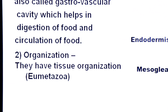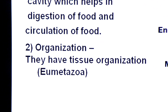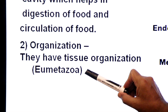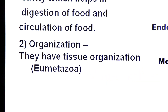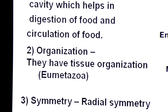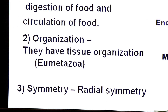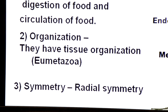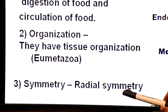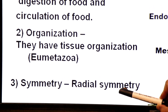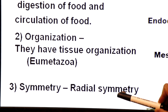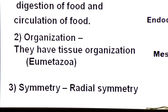Character number two is their organization. They have tissue organization and belong to the group Eumetazoa, having tissue organization. Regarding symmetry, the members of phylum Coelenterata have radial symmetry, meaning their body can be cut into two equal halves by more than one imaginary plane.